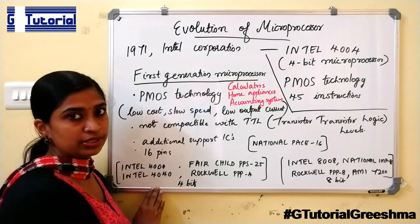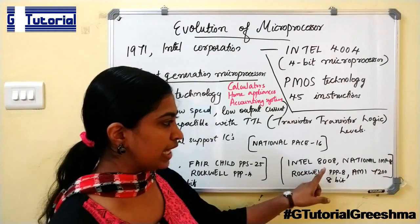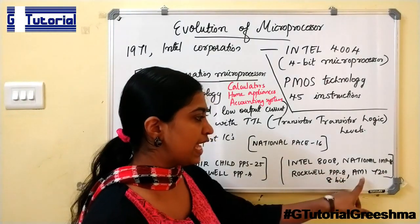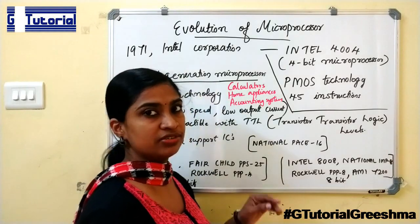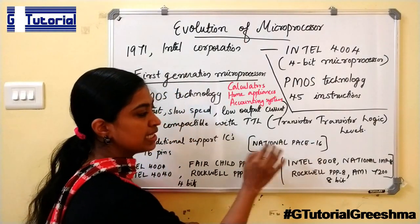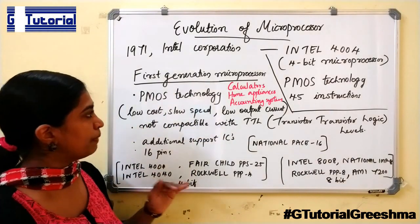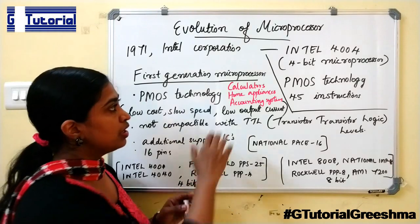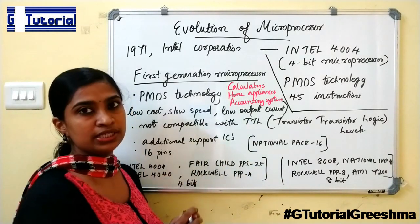Those were the 4-bit processors of the first generation. Intel 8008, National IMP-8, Rockwell PPS-8, and AMI-7200 were the 8-bit processors of the first generation. National PAY-16 was a 16-bit processor belonging to the first generation. The main applications were calculators, gaming machines, home appliances, and accounting systems.